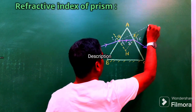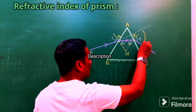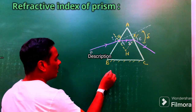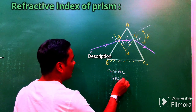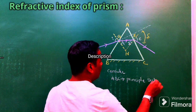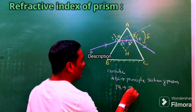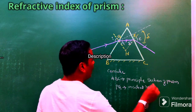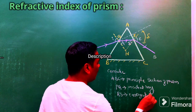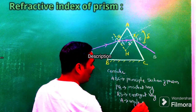The direction of the incident light and the direction of the emergent light make an angle known as the angle of deviation. So ABC is the principal section of the prism, PQ is the incident ray, RS is the emergent ray, and A is the angle of the prism — that is, the angle between the two refracting surfaces.